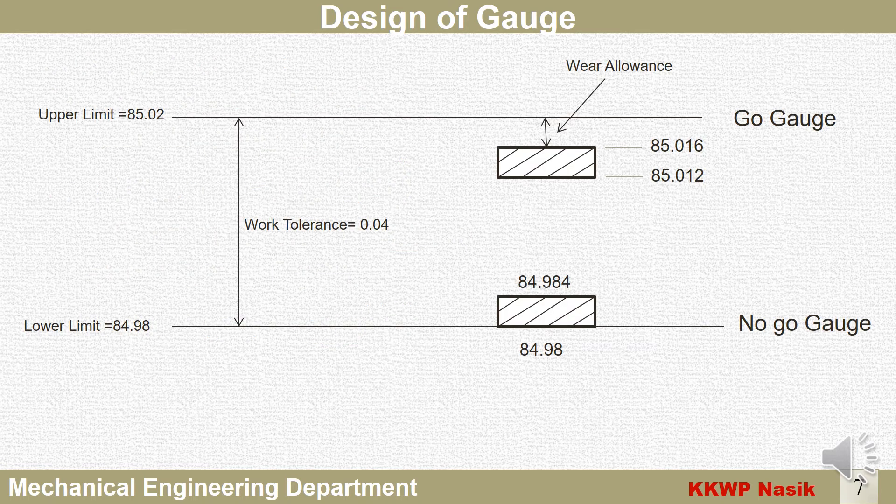As shown in the image, wear allowance is provided for the go gauge because the go gauge passes through the hole, creating friction and a chance of wearing. The no-go gauge does not pass through the hole — it checks only external features — so wear allowance is not required for the no-go gauge.